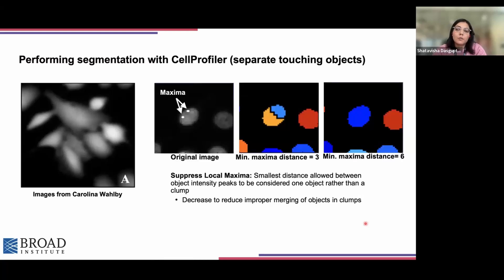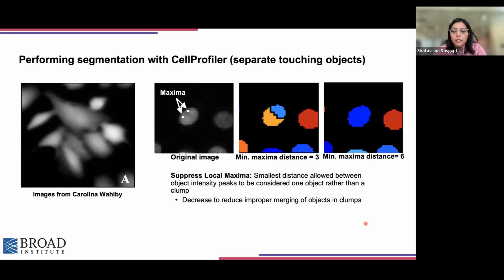There is also the concept of local maxima, which is basically the minimum distance we allow between two intensity peaks within a same object to be counted as the same object or as two different objects. If we increase the maxima distance, it will ensure that an object is not split unnecessarily. And if multiple objects are getting clumped together or there is undersegmentation, we just need to decrease the maxima distance to overcome the problem of undersegmentation.